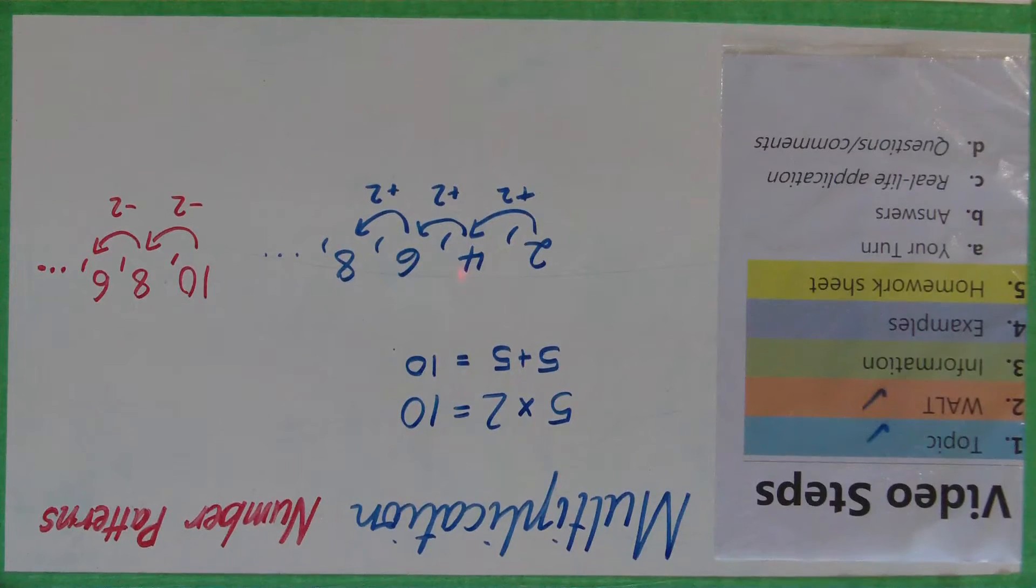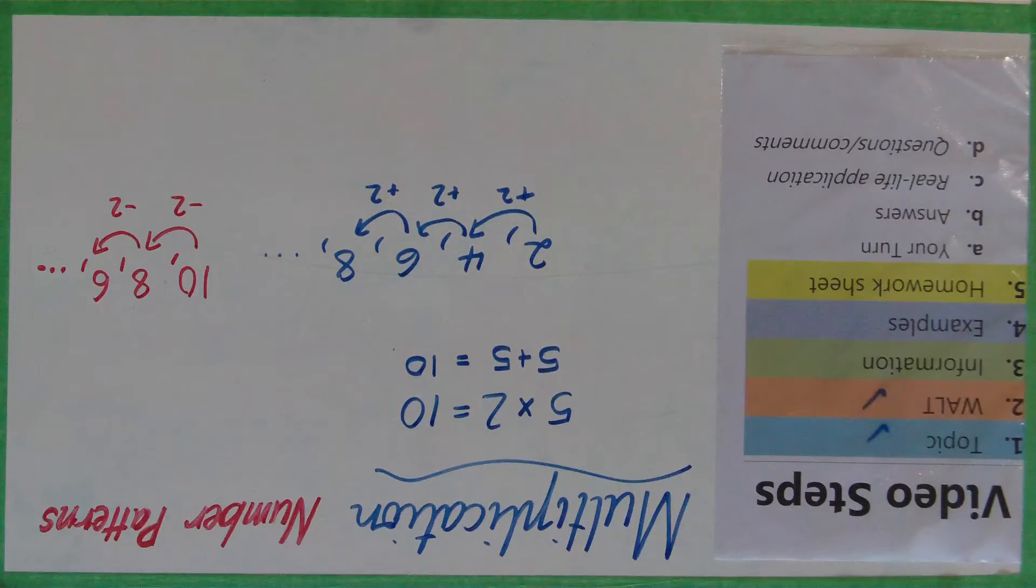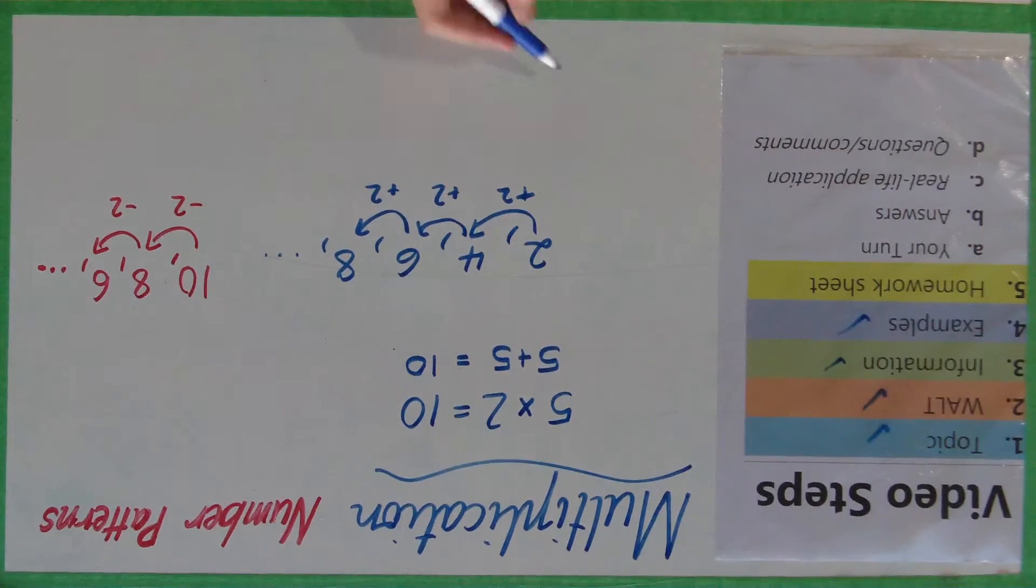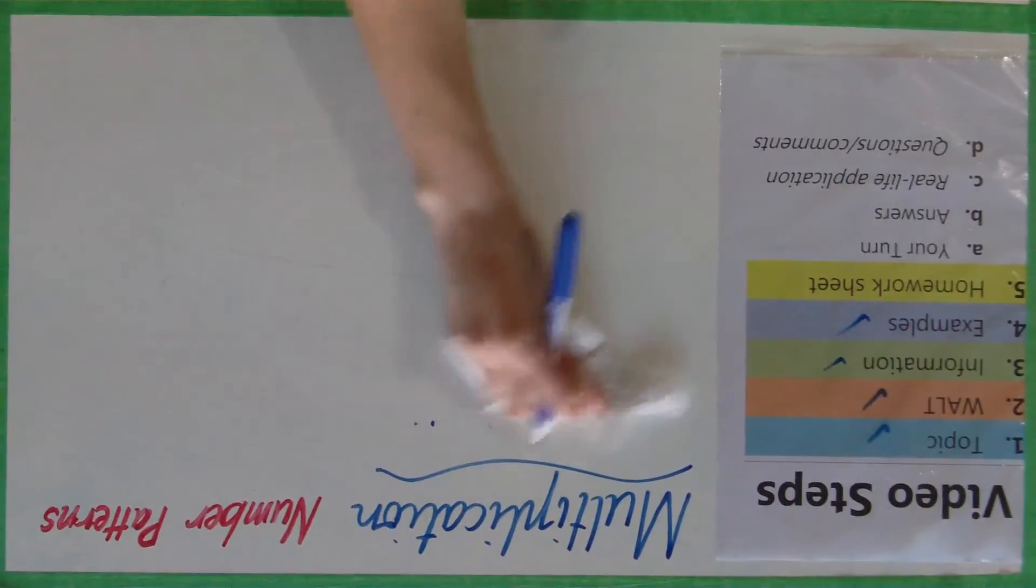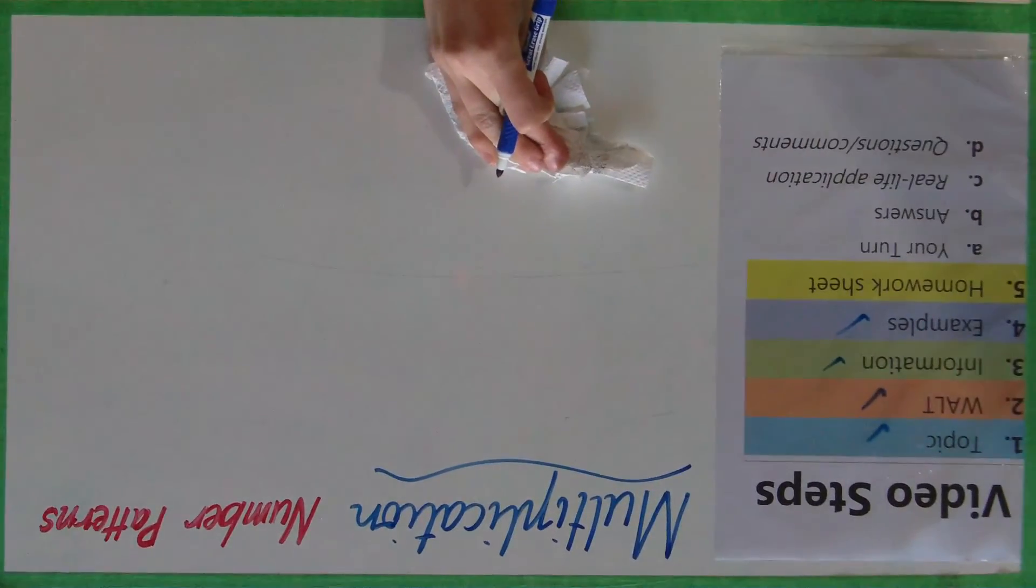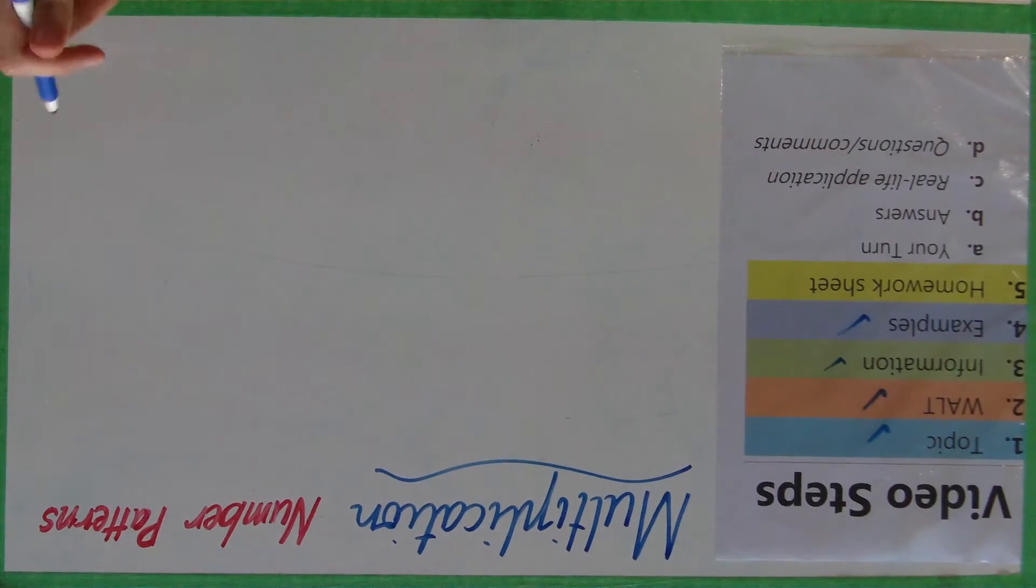But in year 4 we are learning about number patterns that involve multiplication. And so in year 4 we look at number patterns that go like this. This is just moving on to some examples now. So we have a story, I'll actually just use this one I've already prepared.